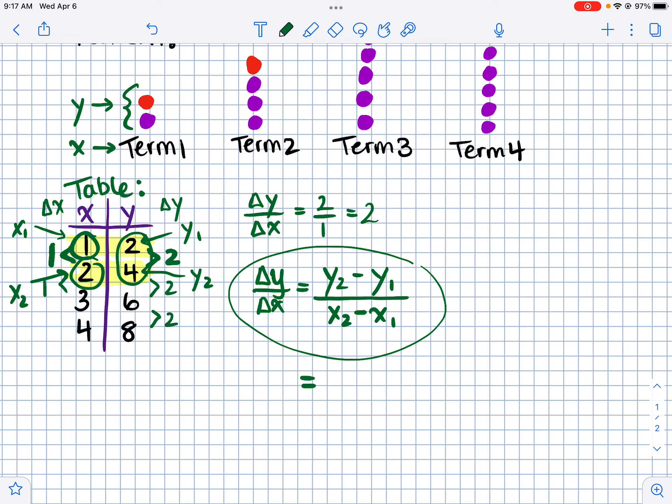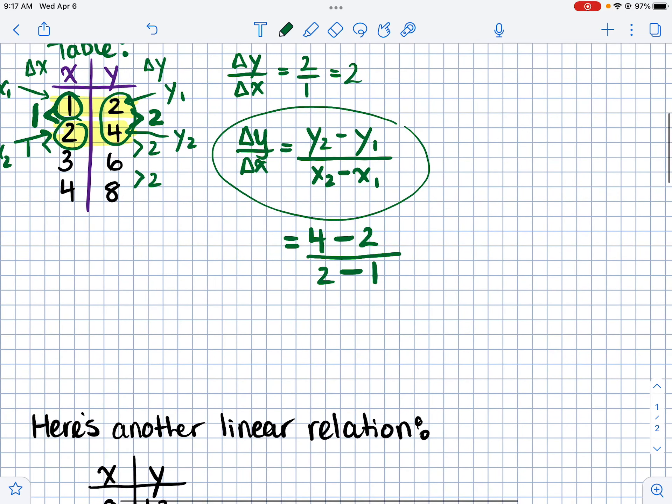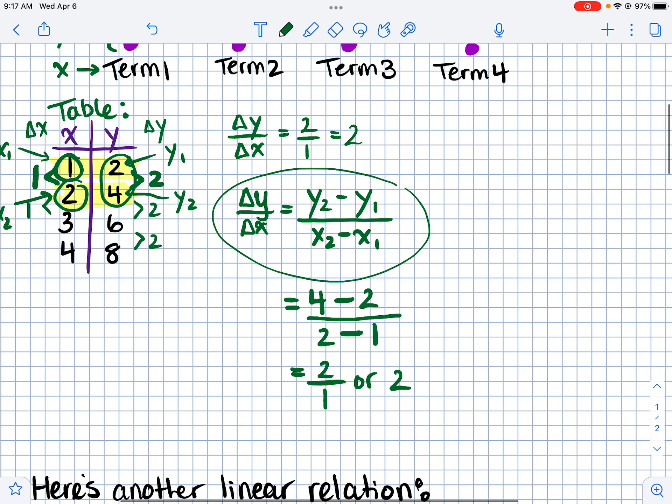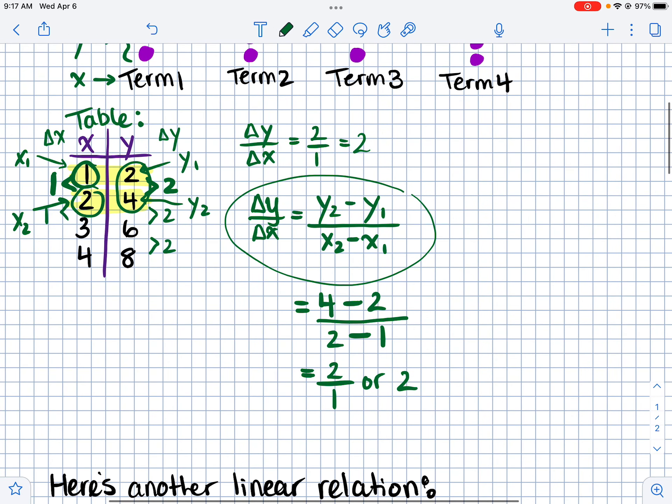Okay, so y2 minus y1. So y2, I said, was four minus y1 is two over x2 is two, and x1 is one. So once I input those values, I can see that four take away two is two, and two minus one is one. So I get a slope of two over one, or just two, which is what I got before. So this equation right here is just another way to determine the slope or the rate of change of a linear relation.